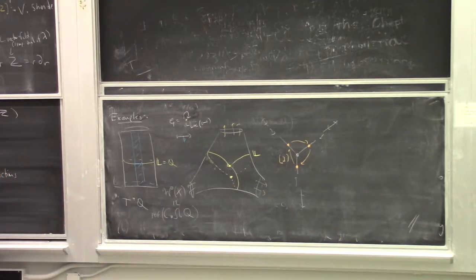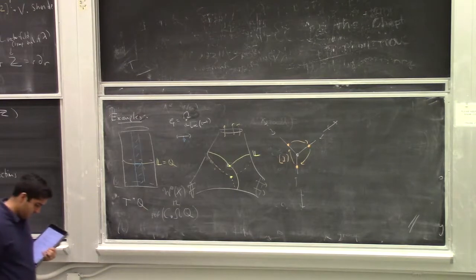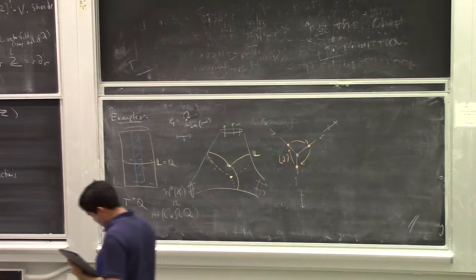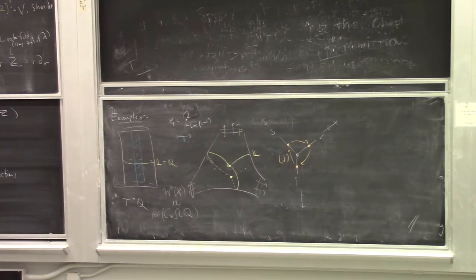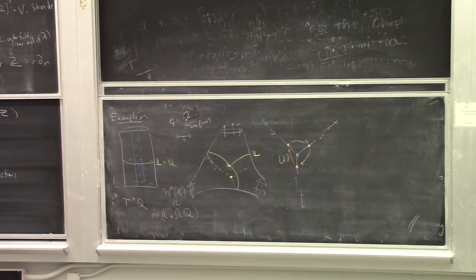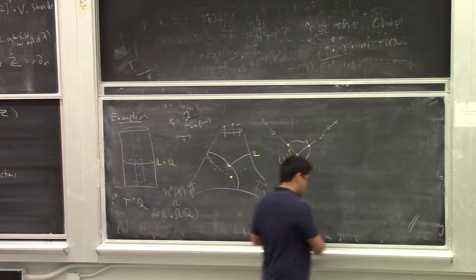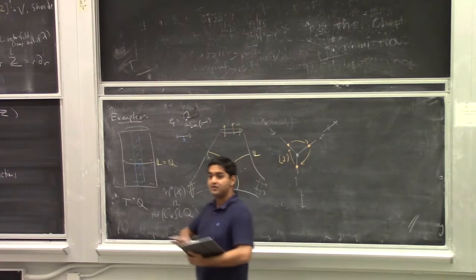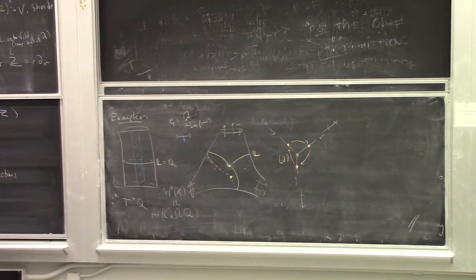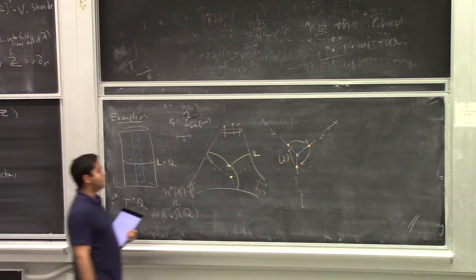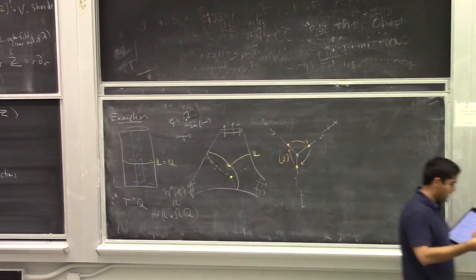Question: There's another situation where cosheaves of categories naturally appear in non-abelian Poincaré duality. Is that connected to this picture? Response: You might well try to study non-abelian Poincaré duality for cosheaves of categories along the branching spine. I would expect that's a theory you could apply here. Under certain hypotheses which imply the skeleton is a singular Lagrangian spine, there should be a cosheaf of categories with global sections the wrapped Fukaya category.